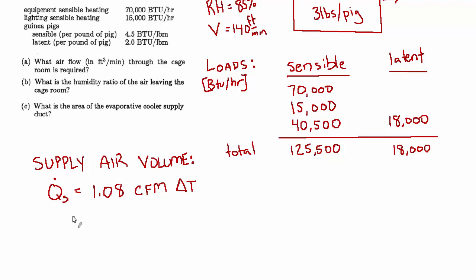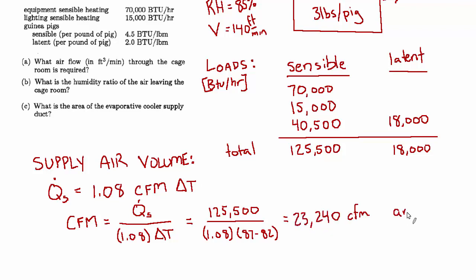Sensible heat load equals 1.08 CFM delta T, and we can rearrange this to solve for CFM. It's going to be the total sensible load divided by 1.08 and the delta T. And substituting in, we have 125,500 divided by 1.08 divided by 87 minus 82, and that gives us 23,240 CFM, which is the answer to A.